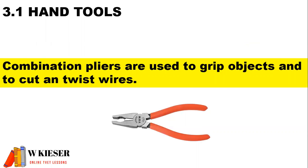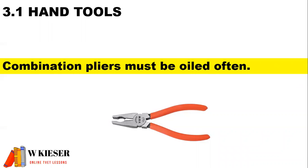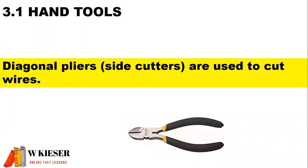Combination pliers are used to grip objects and to cut and twist wires. Combination pliers must be oiled often. Diagonal pliers, also known as side cutters, are used to cut wires, and must also be oiled often.